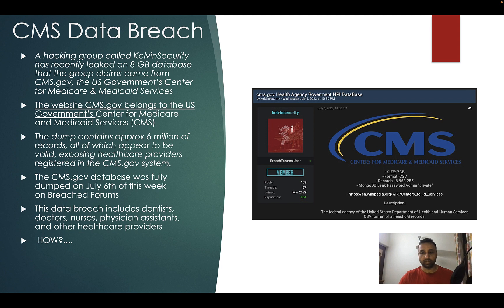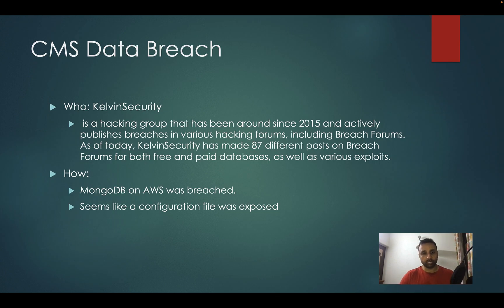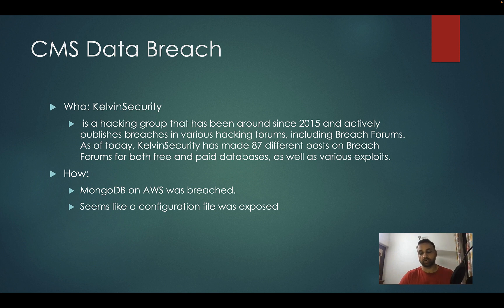There is some personal data available. The posted file is a zip file and once extracted the data is much larger. Going back to this group, they have been active since 2015 and on the breach forum where this was posted they have 87 different threads, dumping both free and paid databases as well as exploits. How was the attack conducted? It was a configuration exploit — the MongoDB hosted on AWS was breached and the data was exfiltrated from that database.